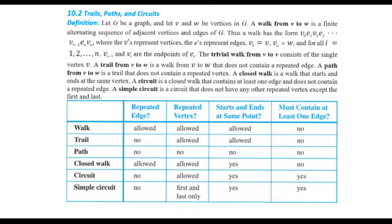Consider G as a graph and let V and W be two vertices in this graph. A walk from V to W is a finite alternating sequence of adjacent vertices and edges of graph G. We can show a walk as the sequence V₀, E₁, V₁, E₂, all the way to V_{n-1}, E_n, V_n. All the V's represent vertices and all the E's represent edges of graph G. V₀ is the start point of the walk equal to V, and V_n equals W, the end point. For all i from 1 to n, V_{i-1} and V_i are the endpoints of E_i.